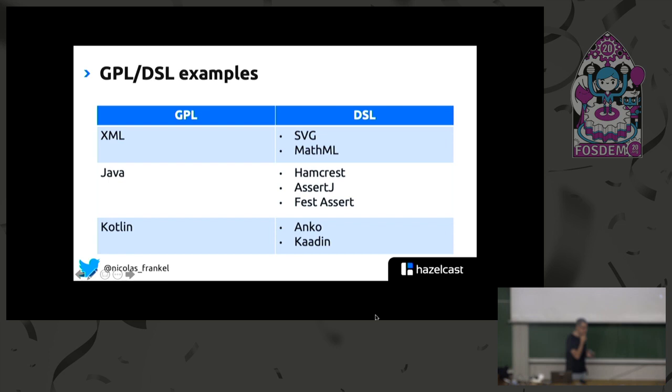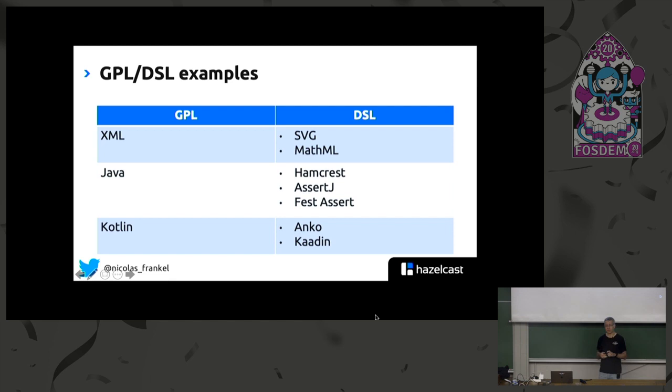In Kotlin, at some point there was a way to create Android UIs with a DSL called Anko, so you didn't need to write your UI in XML — you just coded it, you didn't need to inflate it. It was pretty good. I think they stopped development — I don't know why because I'm not an Android developer. And then I created something called Coding that I will show you at the end.